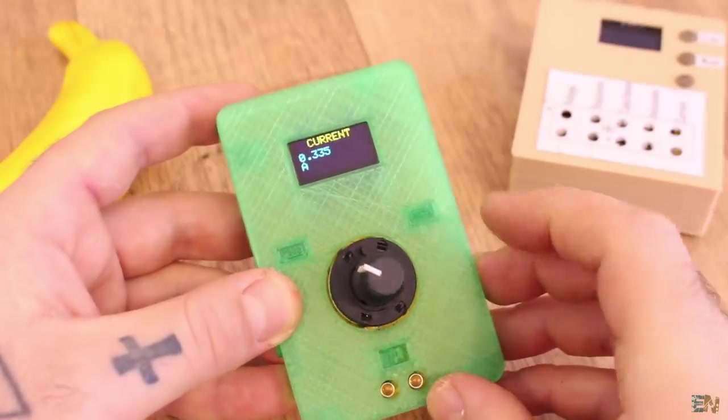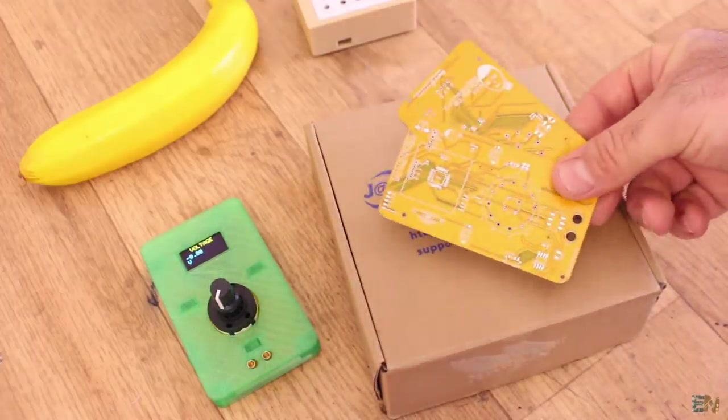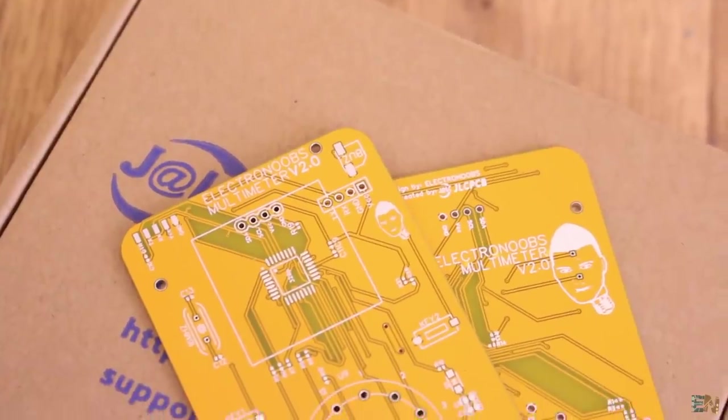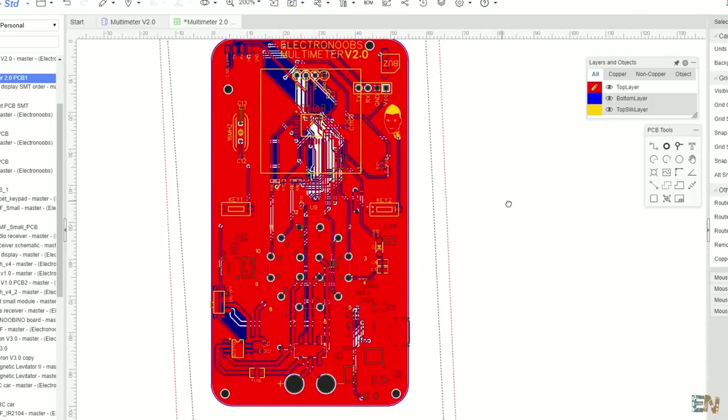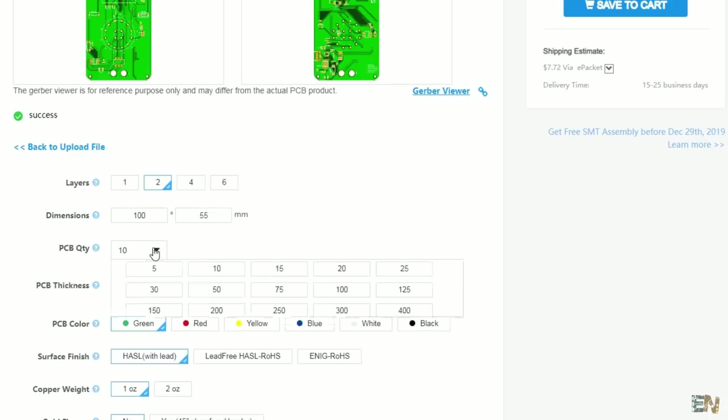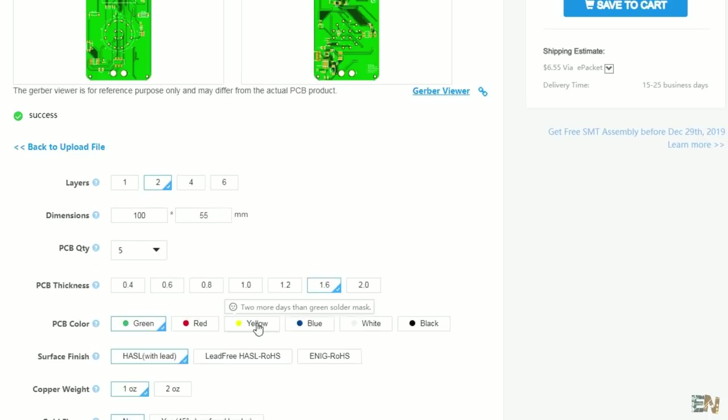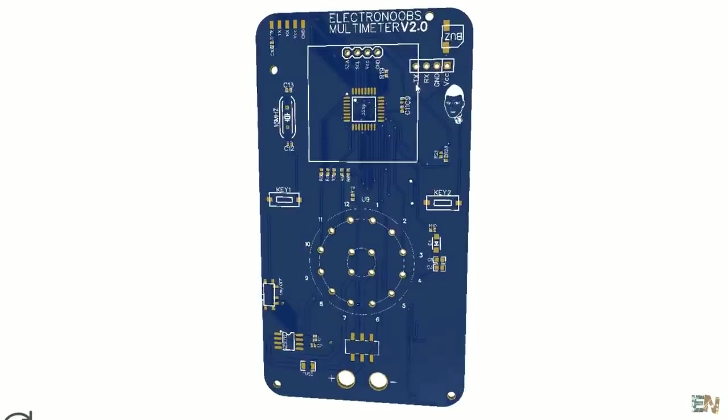Before we see the modes, remember that you could download this PCB, the schematic and the code from below. It's all shared as open source. With the Gerber files of the PCB, go to jlcpcb.com, click for a new PCB and then upload the files. Select the settings, in my case I've selected 5 PCBs and the yellow solder mask. Then you can place the order for only 2 dollars plus shipping.